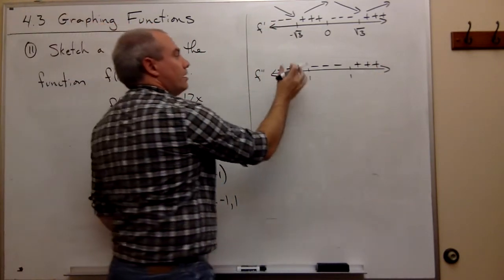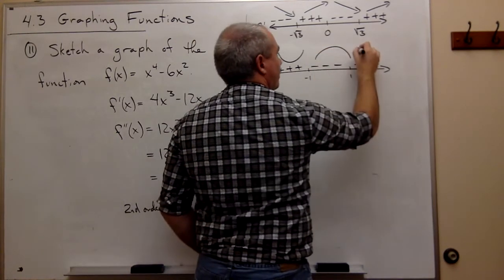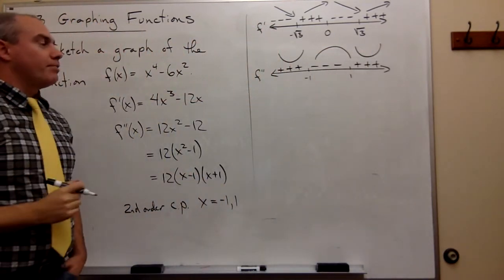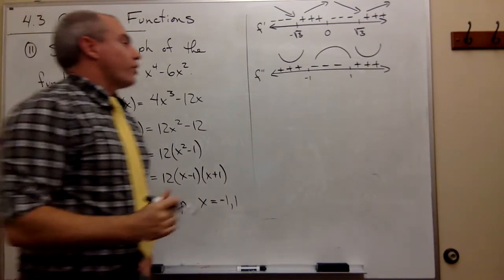So positives mean that I'm concave up. Negatives mean I'm concave down. Positives mean I'm concave up. Now I think I'm about ready to graph this thing.